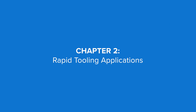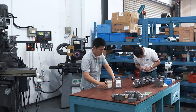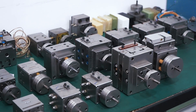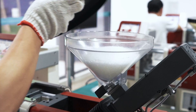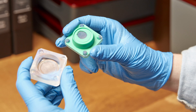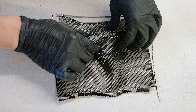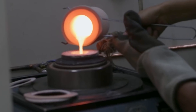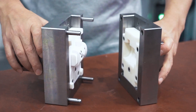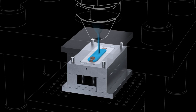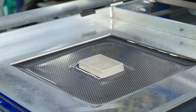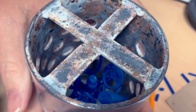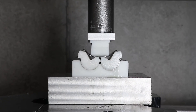3D printing can be used to support a variety of traditional manufacturing processes to produce plastics, silicone or rubber parts, composites, and even metal parts. Use 3D printed molds for manufacturing processes such as injection molding, overmolding, compression molding, thermoforming, casting, or sheet metal forming.